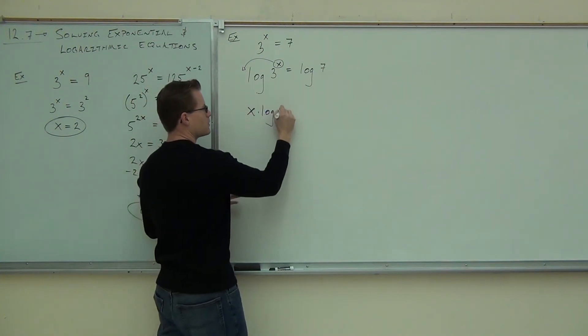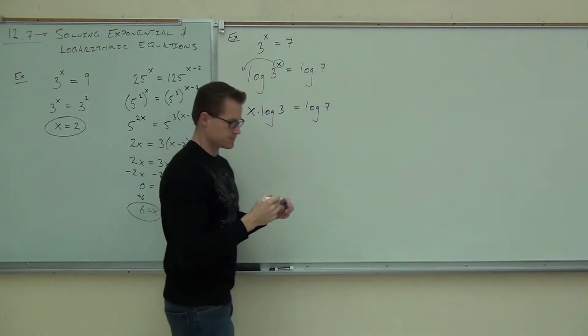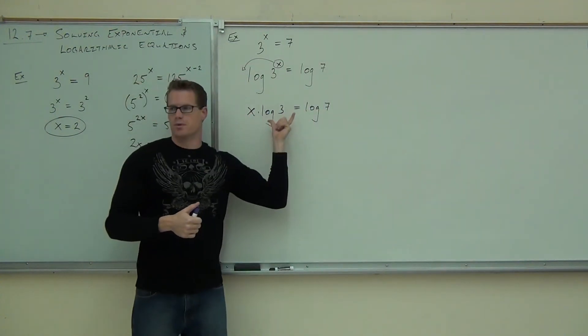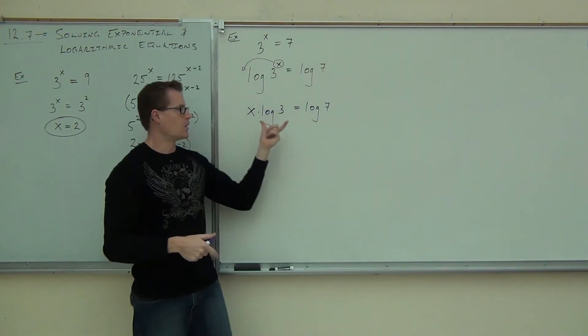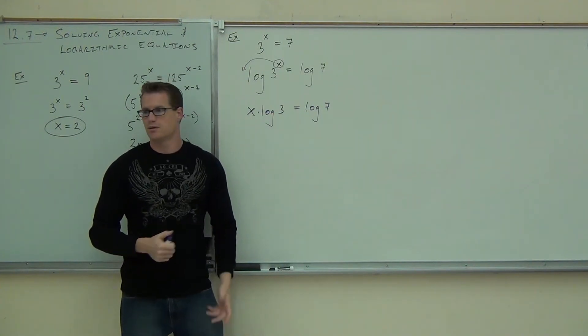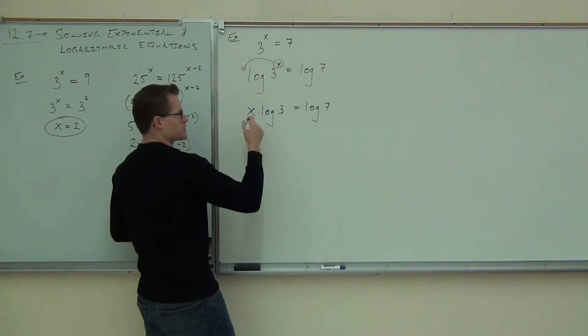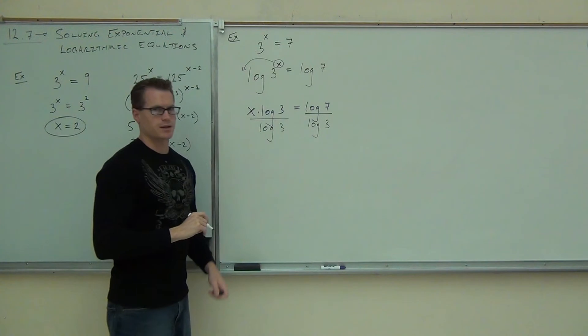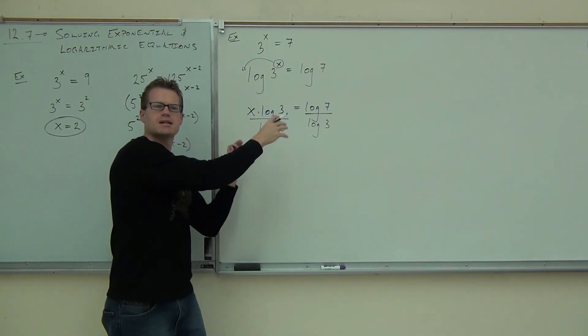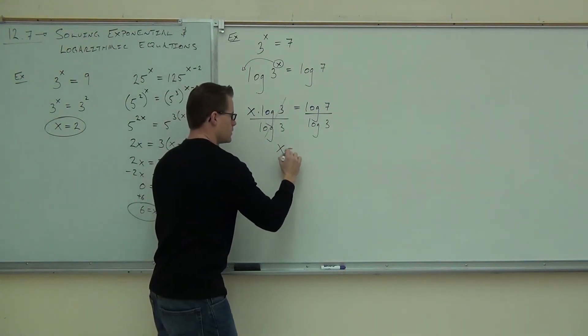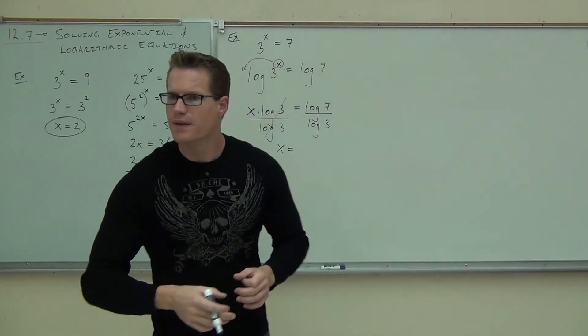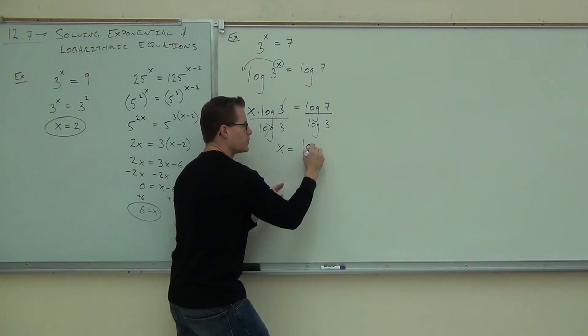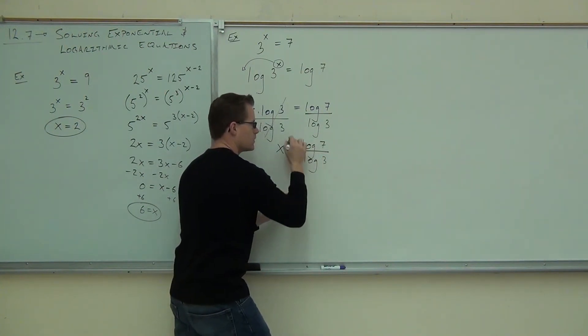Do you remember the power property? It said, this is cool, this is awesome. Here's why it's so cool. If you remember anything about the power property, it said whenever I have an exponent, which I have right here, I can move that to the front of my logarithm. So instead of having three to the x, I have x times log three equals log seven. Why does it make it cool? Hey, check it out. You've got x times something. That's a number. Log three is a number. You can plug it in your calculator, right? That's a number. How do you get rid of x times some number? As long as we divide by both sides, or divide both sides by that.